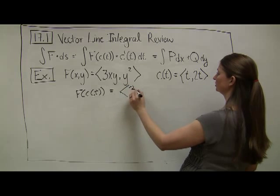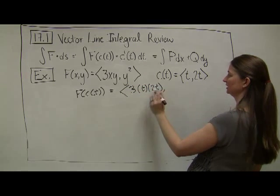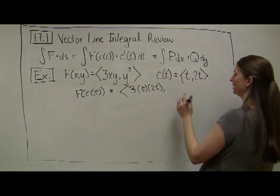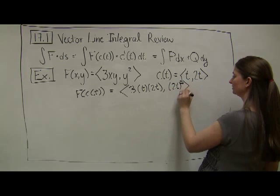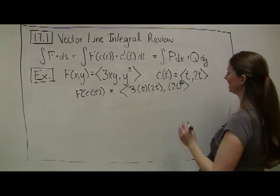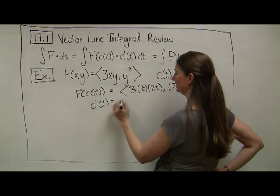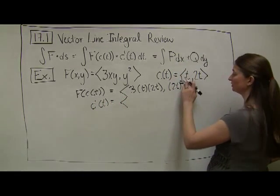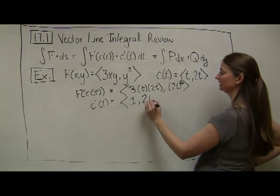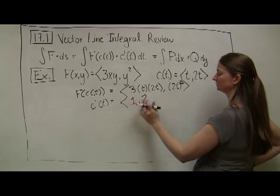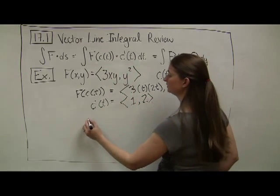I get the vector (3 times t times 2t, (2t)²), which looks familiar. I take the dot product with c'(t), which is (1, 2). This also looks familiar—the derivative with respect to t is 1, the derivative of 2t is 2.